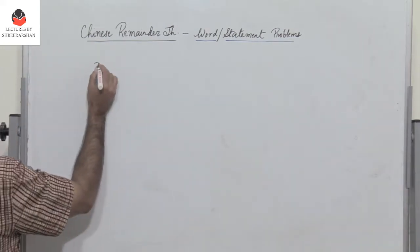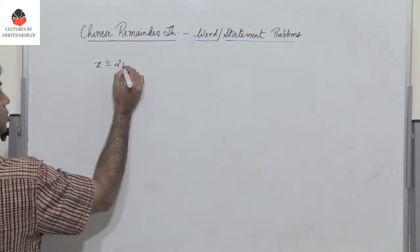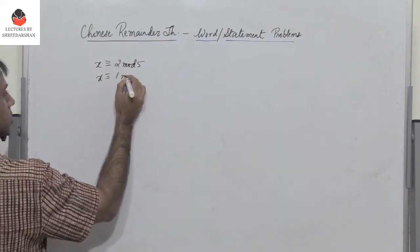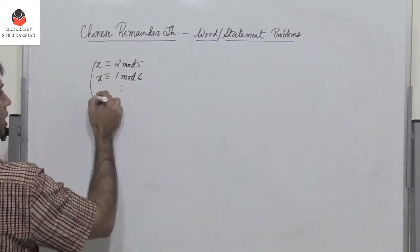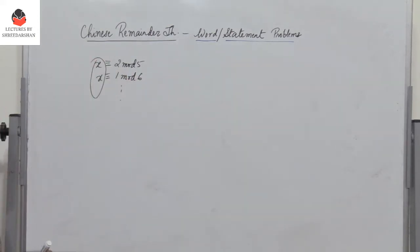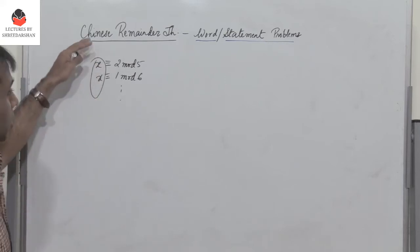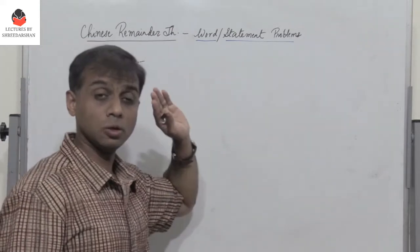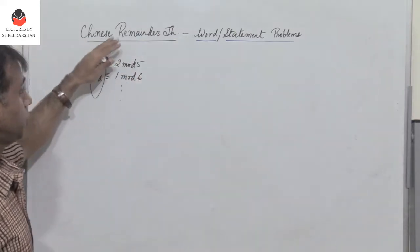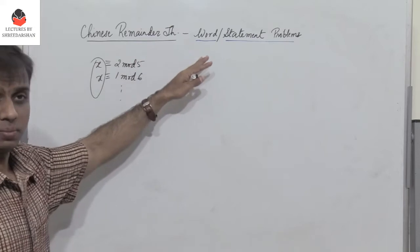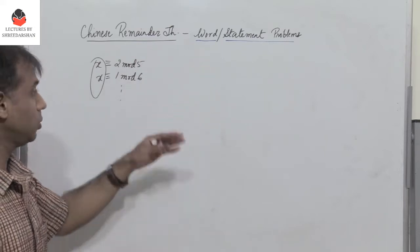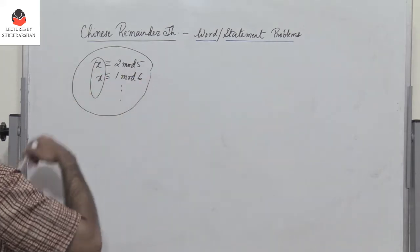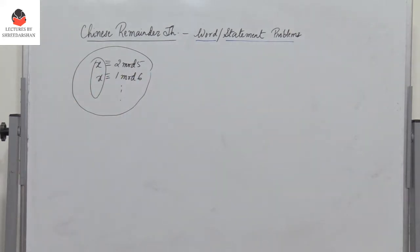So if you are given a problem — say, x is congruent to 2 mod 5, and x is congruent to 1 mod 6 — and I need to find a value x, we use the Chinese Remainder Theorem. But there are also problems where the problem is worded, and from the statement we need to derive these congruence equations and then solve using CRT.